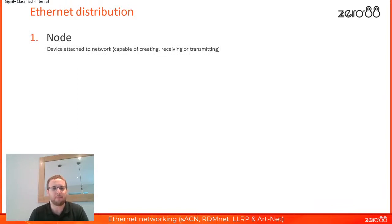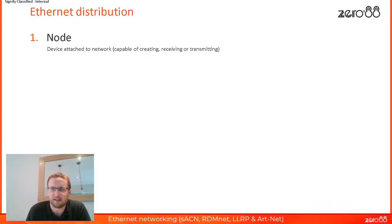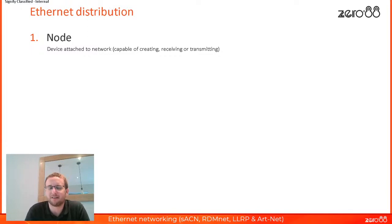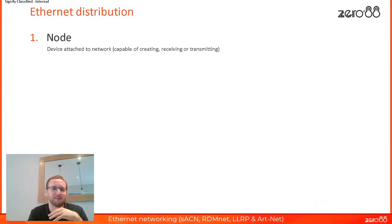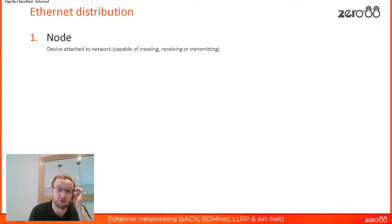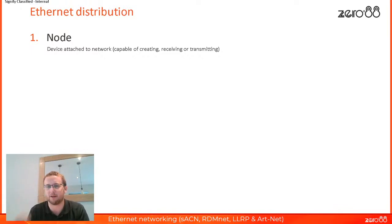Let's talk about what these network boxes are — some terms used when distributing Ethernet. The first term is a node. A node is a device that is attached to the network — it doesn't matter what that device is. Your smartphone, your Apple Watch, your laptop — they are nodes. They're devices that either create Ethernet data or receive it. In the lighting world, your console would be a node, and your moving light, if it had Ethernet straight into it, would also be a node.